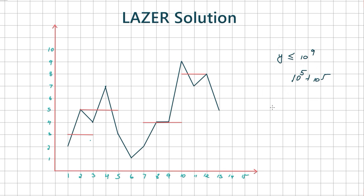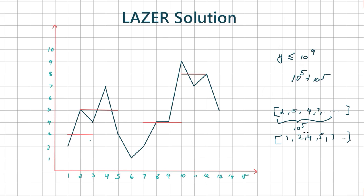We do this by pushing all the y coordinates of the points into an array. For example, the first point has y coordinate 2, the second has 5, the third has 4, the fourth has 7, and so on. The size of this array will be roughly 10^5. Next we sort this array — giving something like 1, 2, 4, 5, 7, and so on — and then remove all duplicate elements, ending up with a sorted array of unique y values.